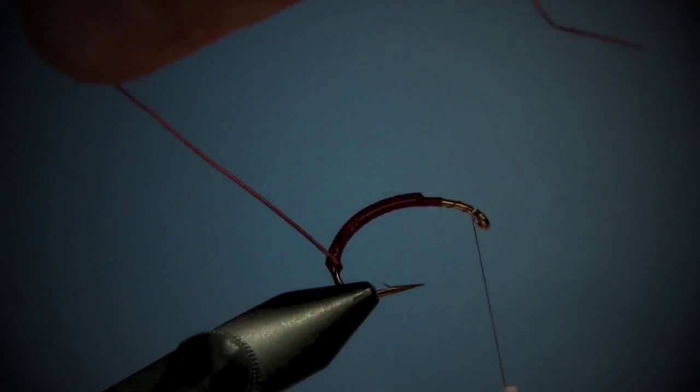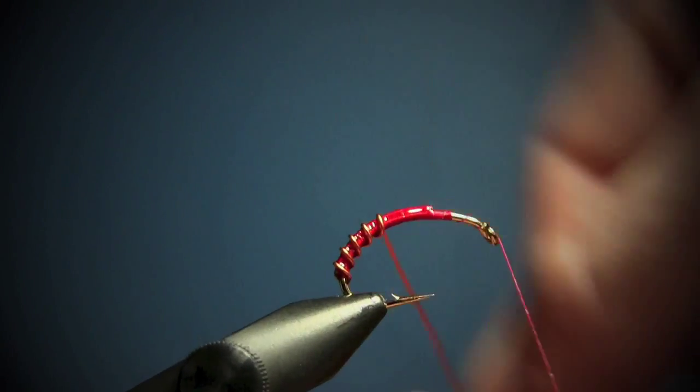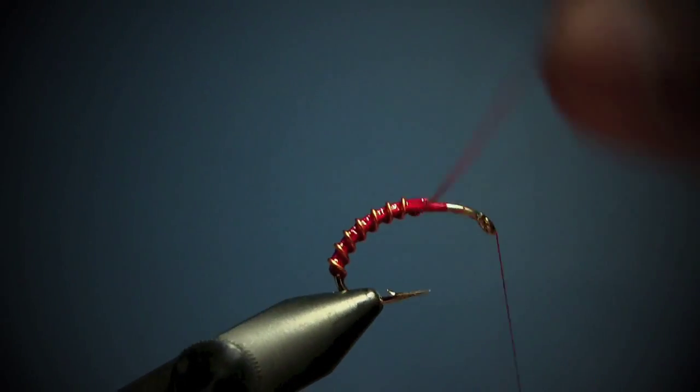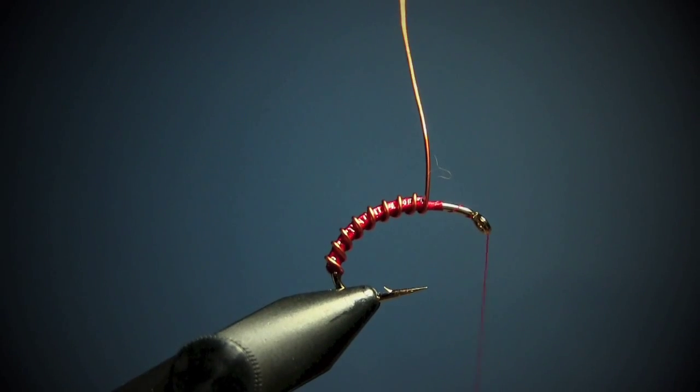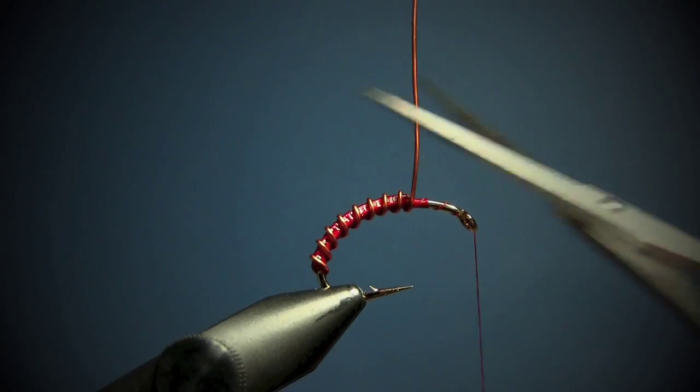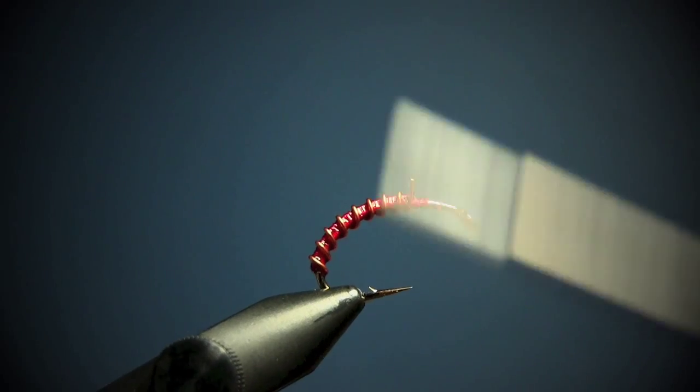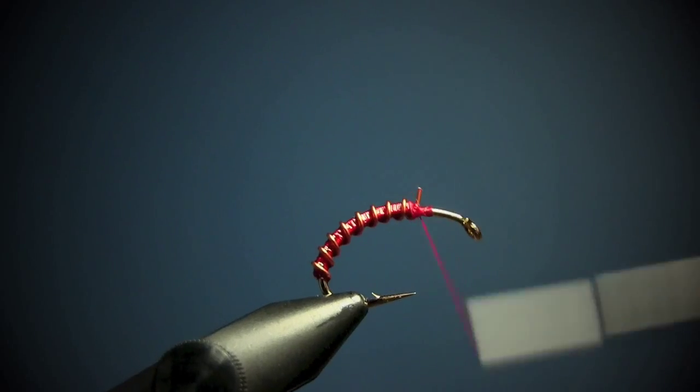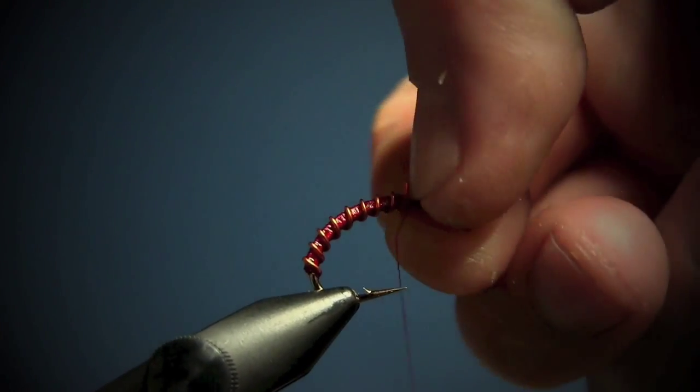And I rib up, about two millimeters in between. Like that. Cut off the wire. I go back and then I take a couple turns just there, and I take my nail like this and just squeeze, bend it, and make a dubbing loop.